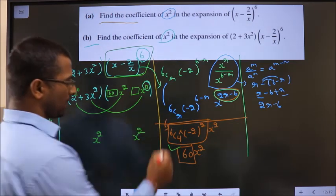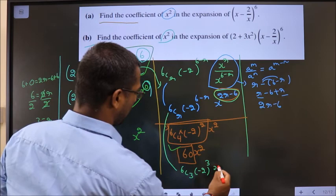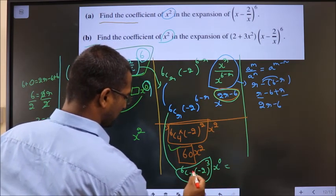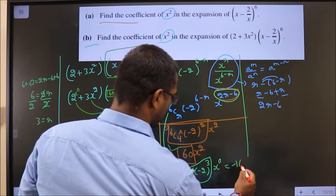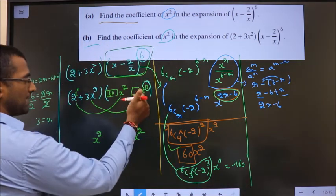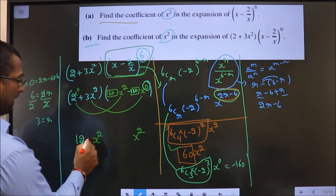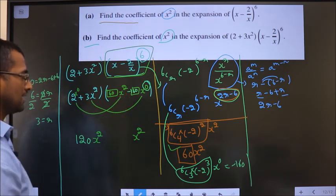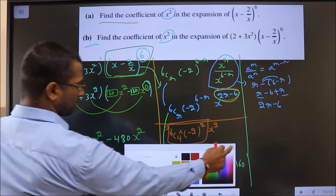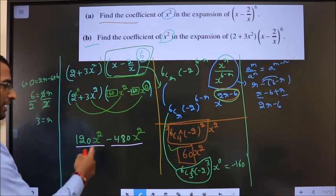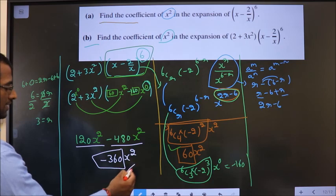Replace r equal to 3 in this. So, what do we get? 6C3 minus 2 power 6 minus 3 is 3 and x power 0. Put this at once in the calculator. You get the answer to be minus 160. So, coefficient of x power 0 is minus 160. Now, multiply. 2 into 60 is 120x square. 3 into minus 160 will be minus 480x square. Both are like terms. So, 120 minus 480 is minus 360x square. So, coefficient of x square is minus 360. That is our answer.